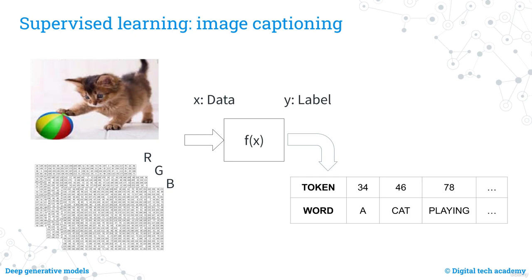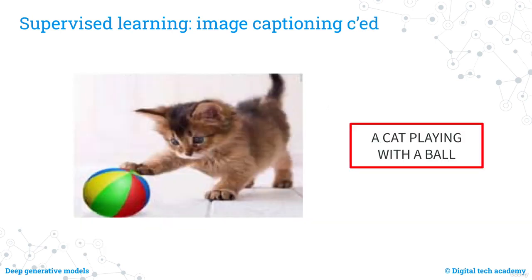The task of image captioning involves generating a short natural language description of an image, capturing the objects depicted and the relationships between them. Like object detection and classification, the image captioning algorithm produces numerical output mapped to words using a table — a process referred to as tokenization. In this specific example, the result is: 'a cat playing with a ball.'